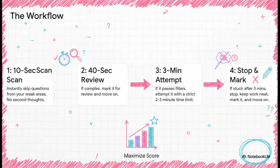Step one is a super-fast 10-second scan. You see a topic you're weak in, maybe permutations and combinations, you just skip it instantly. If it's a strong topic, you move to step two. Give it another 30 to 40 seconds. Does it look too wordy or complicated? Mark it for review and move on. Only if it passes both filters do you actually attempt it. And even then, you have a hard stop at three minutes. Can't solve it? Stop, mark it, and get out.